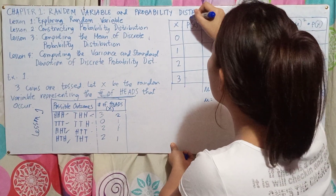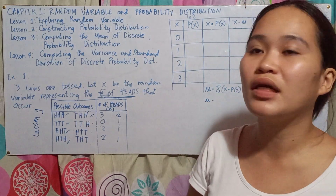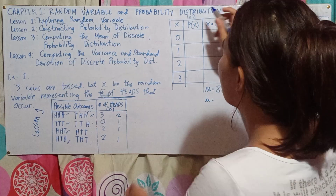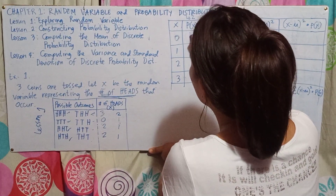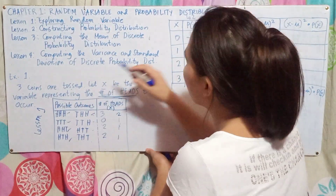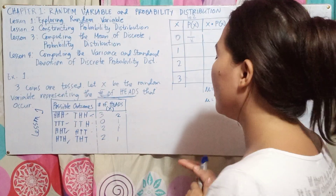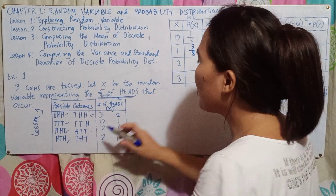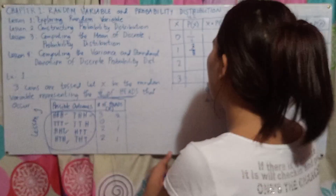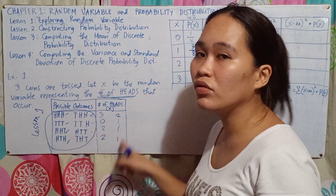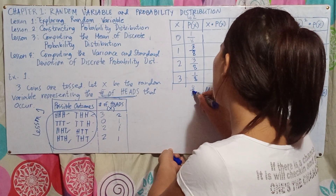Next, Lesson 2 — constructing probability distribution, or the probability of the random variable X, or P(X). So sa 0, ihaponin mo pila ka beses ang 0 nag-appear. Since isa lang ang 0, ang probability is 1 over 8. Next is 1 — tatlo ang nag-appear, so 3 over 8. Next, 2 — tatlo pod, so 3 over 8. Next, 3 — isa, so 1 over 8. Pag i-total na, magiging 8 over 8 or 1.